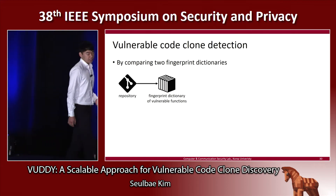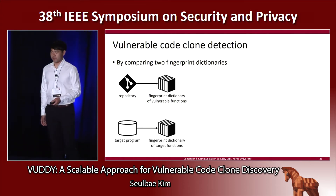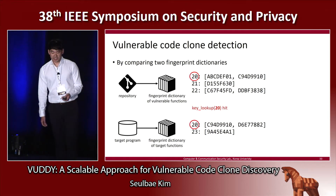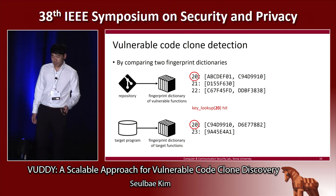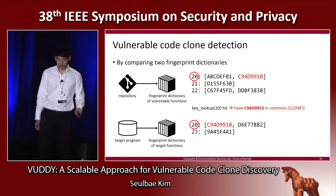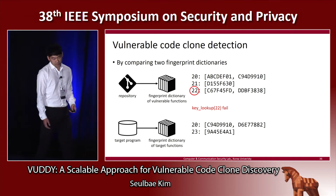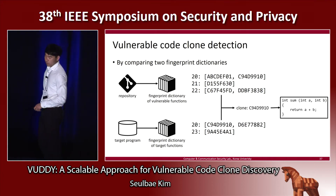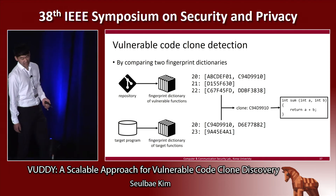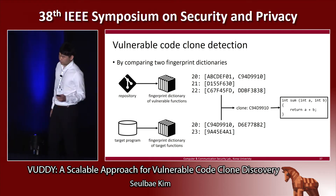Vulnerable code clone detection is as simple as comparing two fingerprint dictionaries — one for vulnerable functions and one for target functions. We first conduct a key lookup; a lookup of key value 20 is a hit, and then we proceed to a hash lookup. We found one hash value in common, which is the code clone we're looking for. If there's no match in key lookup, we don't proceed to the hash lookup. We can conclude that our target program contains one vulnerable code clone with hash value C9F4D9910. Using an inverted index file, we can retrieve the vulnerable function we're looking for.